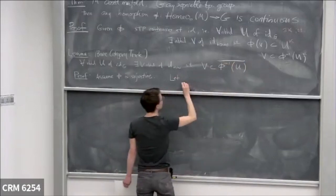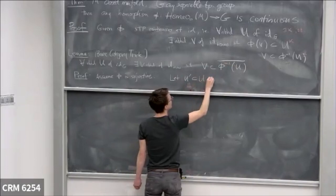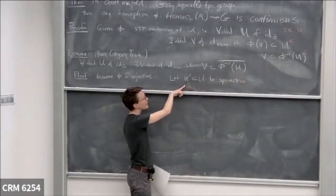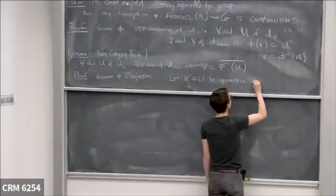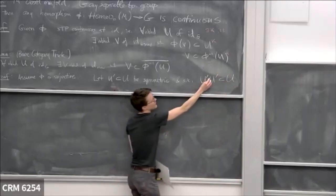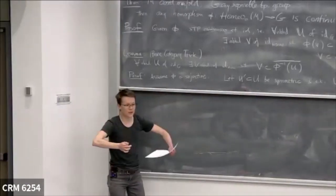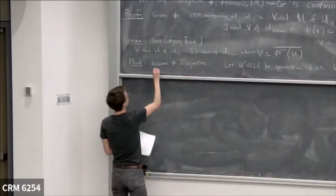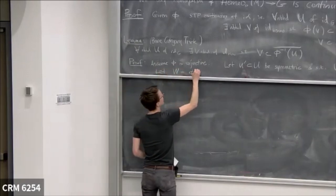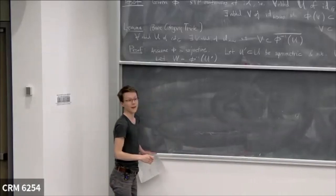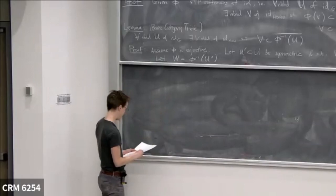Let U′ inside U be a smaller neighborhood that is symmetric — meaning if g is in U′ then g-inverse is also in U′ — and such that U′·U′ is a subset of U. That's just shrinking to a symmetric ball of half the radius if you're thinking metrically. Let W be the pre-image of this U′; the smaller set gives me a little wiggle room.